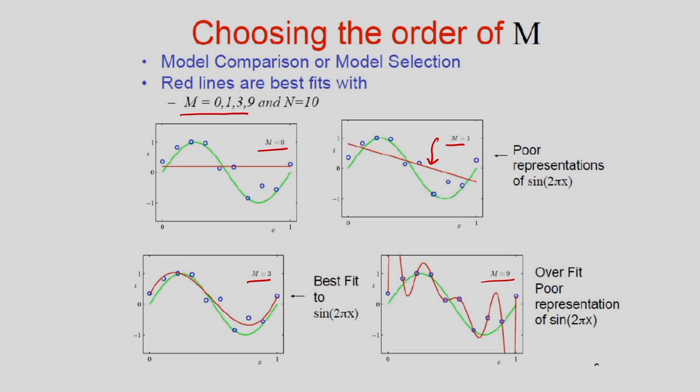The main problem with m = 9 is that we have a limited number of training data samples (only 10 data points) but are using a very complex model. This corresponds to the curse of dimensionality — with limited training samples and a complex model, overfitting occurs. We have to consider a simple model when we have limited training samples.